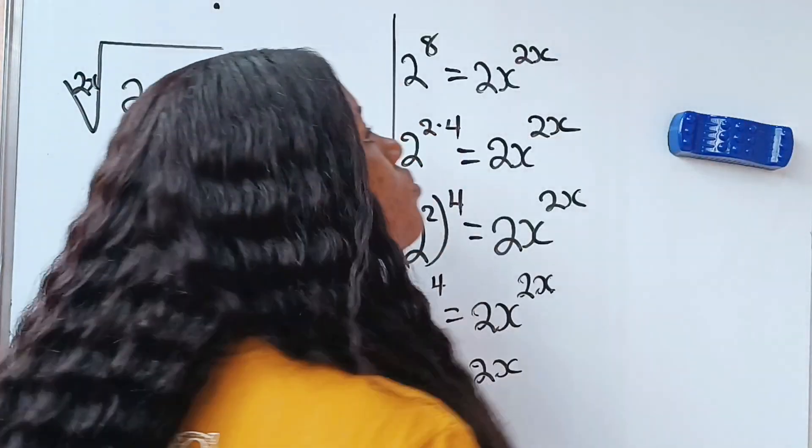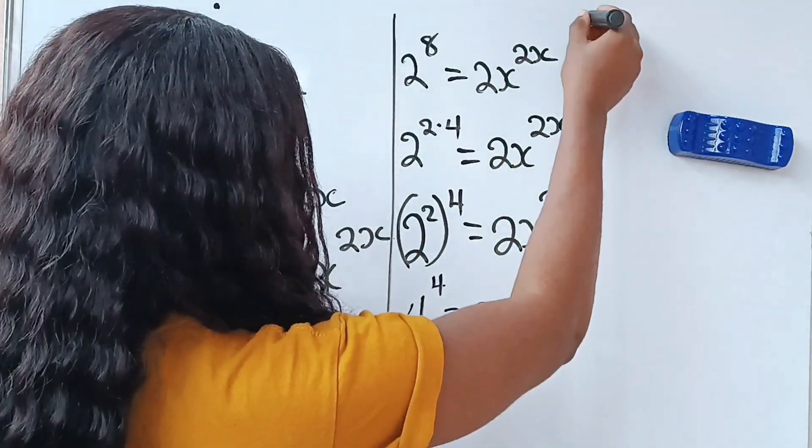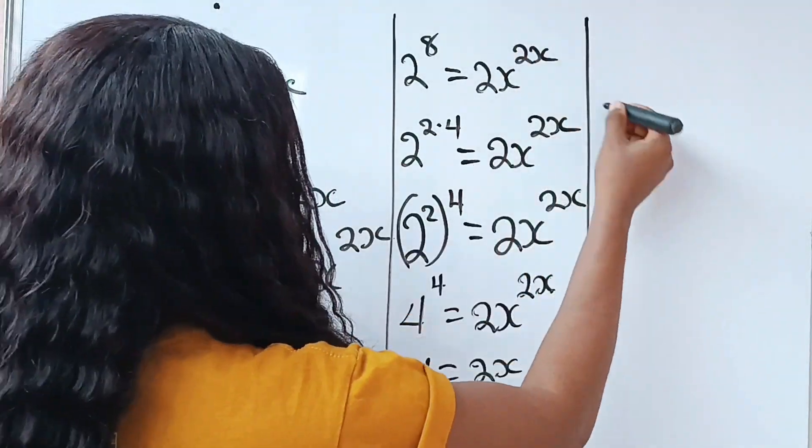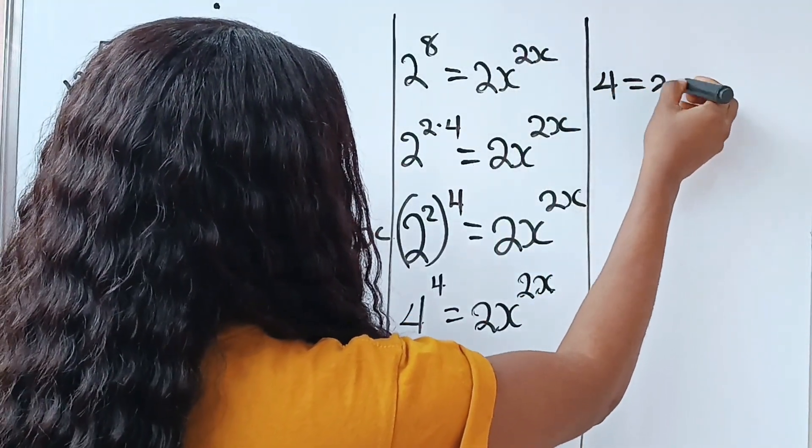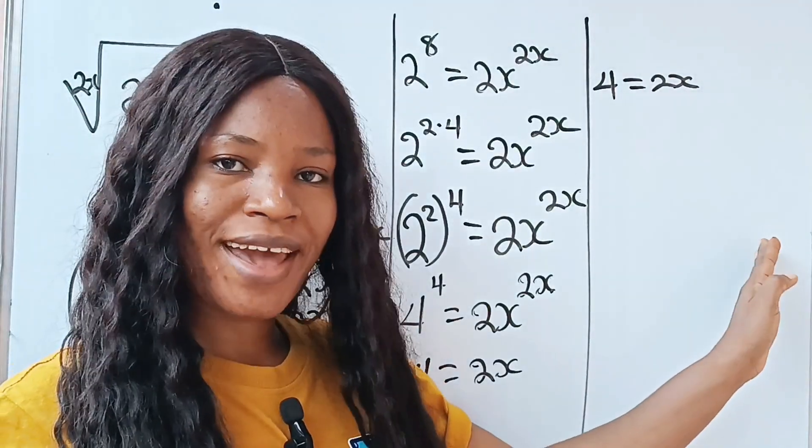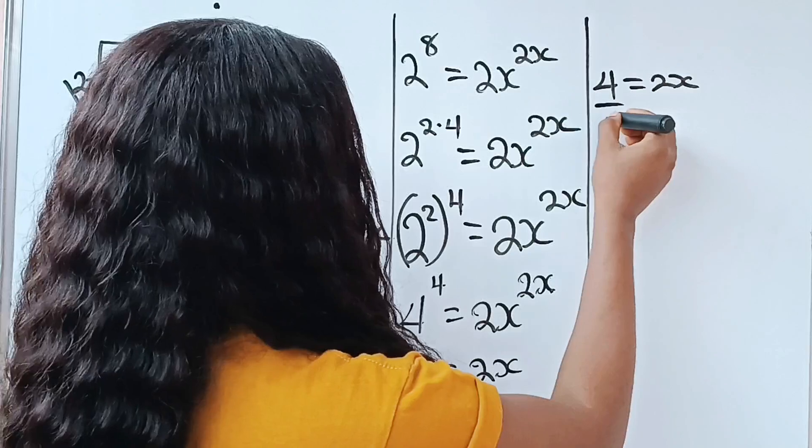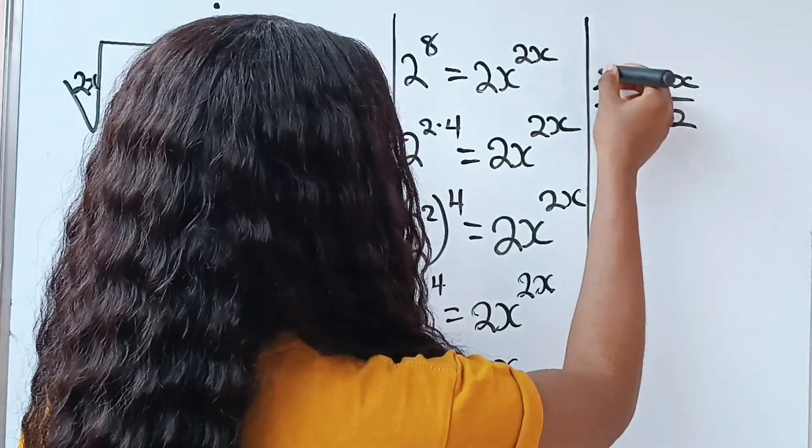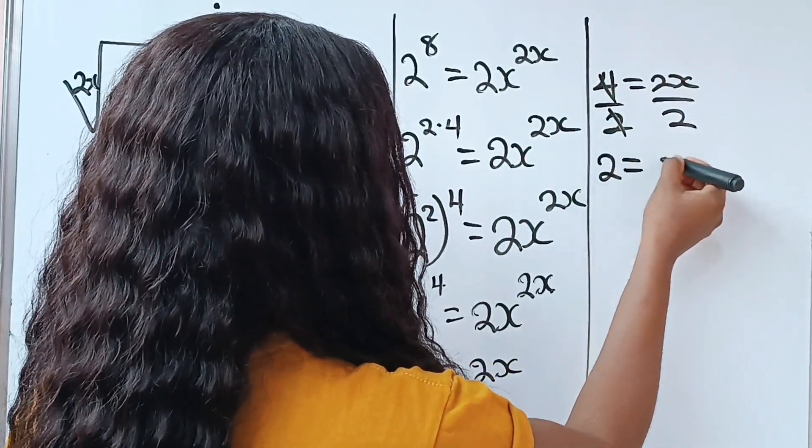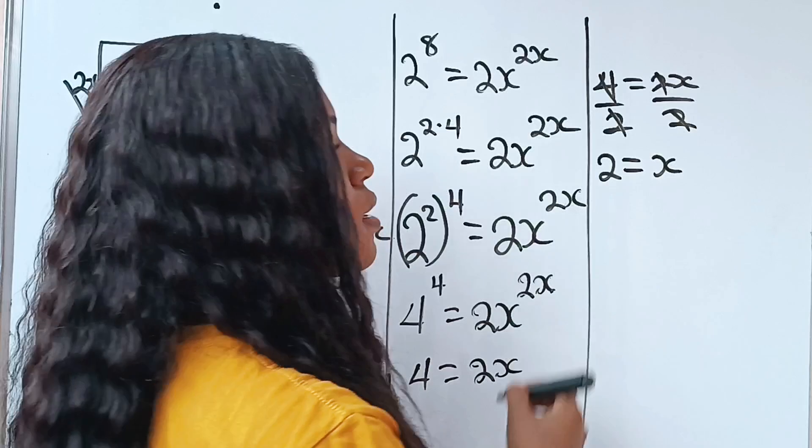Now, let's continue. We can solve this in this form. Since 4 is equal to 2x and we are looking for the value of x, let's just divide both sides by 2. So we have that 2 is equal to x. Perfect.